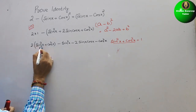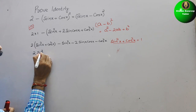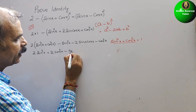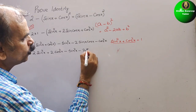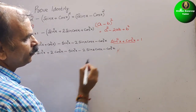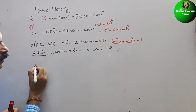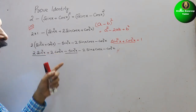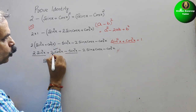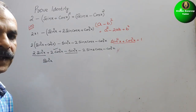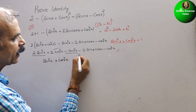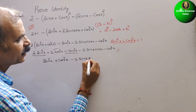Now, 2 into sin square x is 2 sin square x, plus 2 cos square x, minus sin square x minus 2 sin x cos x minus cos square x. If you see, 2 sin square x minus sin square x gives sin square x. Similarly, 2 cos square x minus cos square x gives cos square x. So we get sin square x plus cos square x minus 2 sin x cos x.